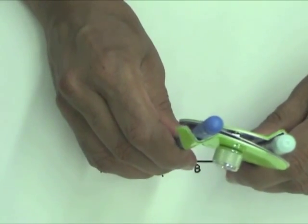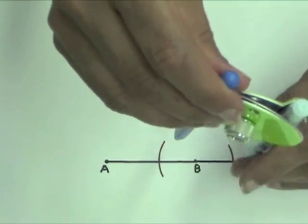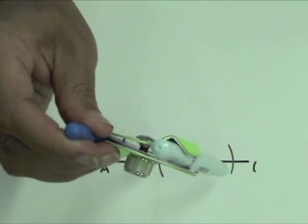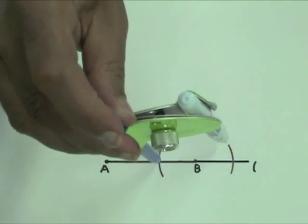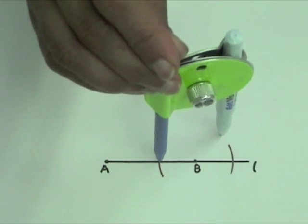Open the compass width wider. Place the compass point on the first of the two arcs and draw an arc above half line L.